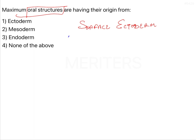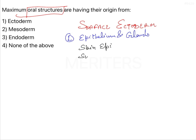The first thing is going to be your epithelium and glands. Under epithelium and glands, you will be having your skin epithelium, sweat glands, and sebaceous glands.